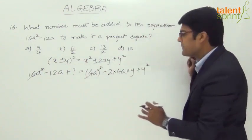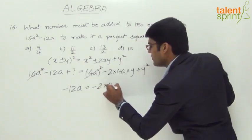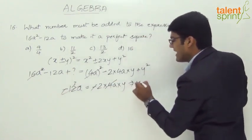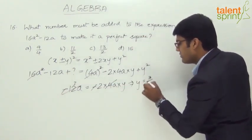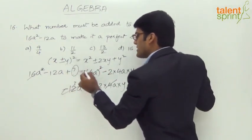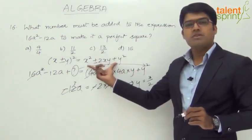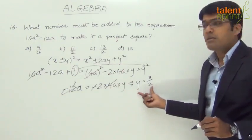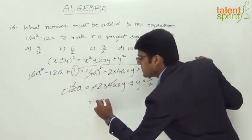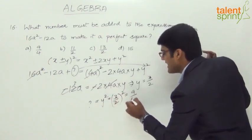We can say -12a must equal -2 × 4a × y. Solving: 4a cancels and the minus signs cancel, giving y = 3/2. So y = 3/2. The question mark represents y², and y² = (3/2)² = 9/4.